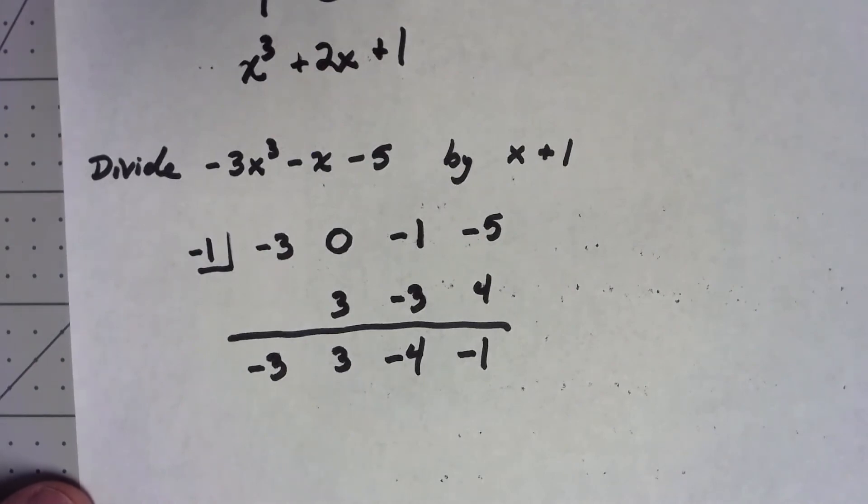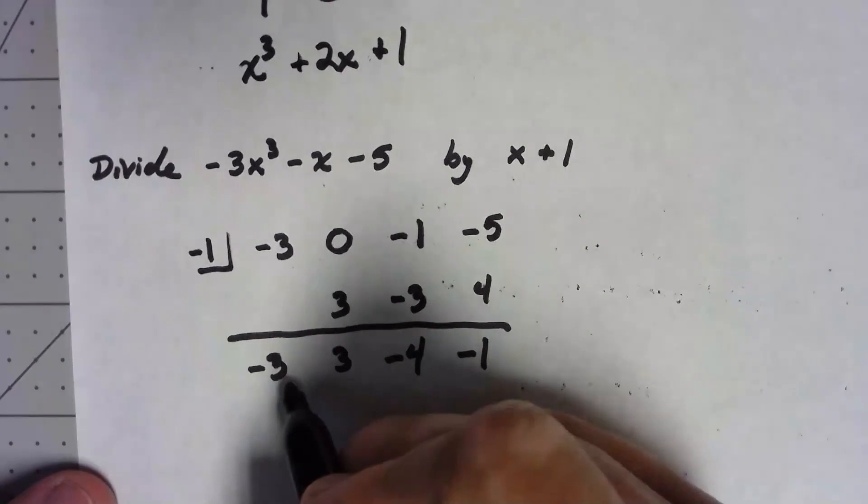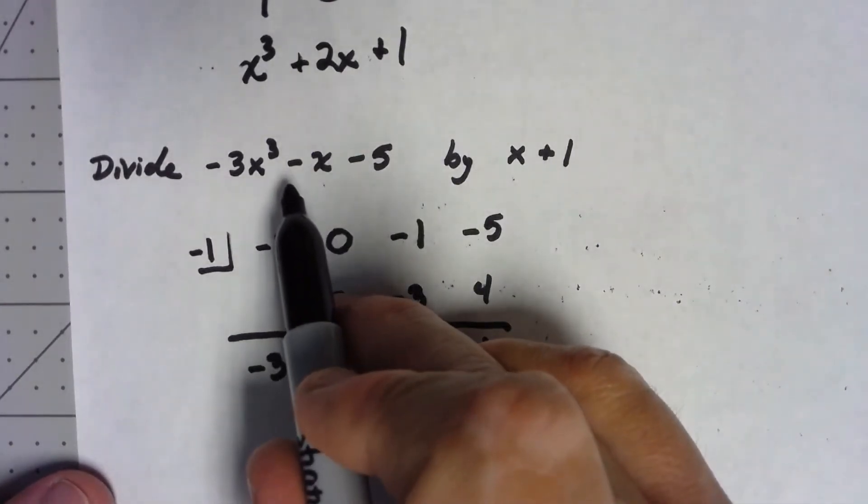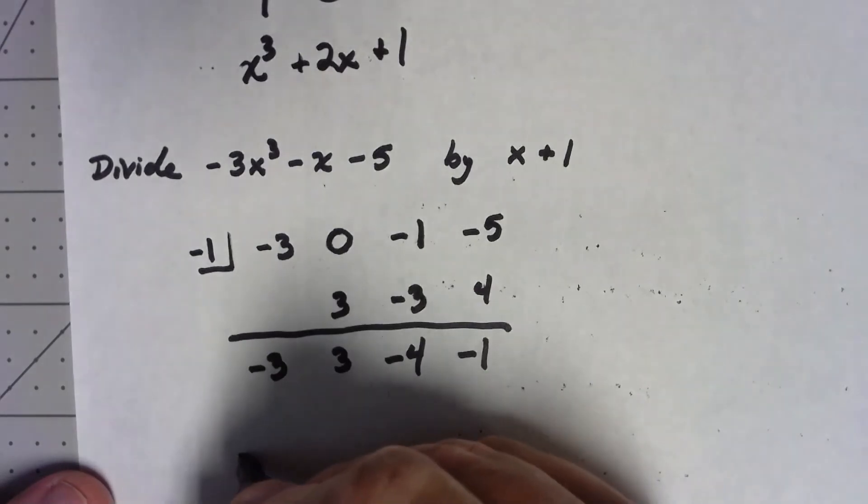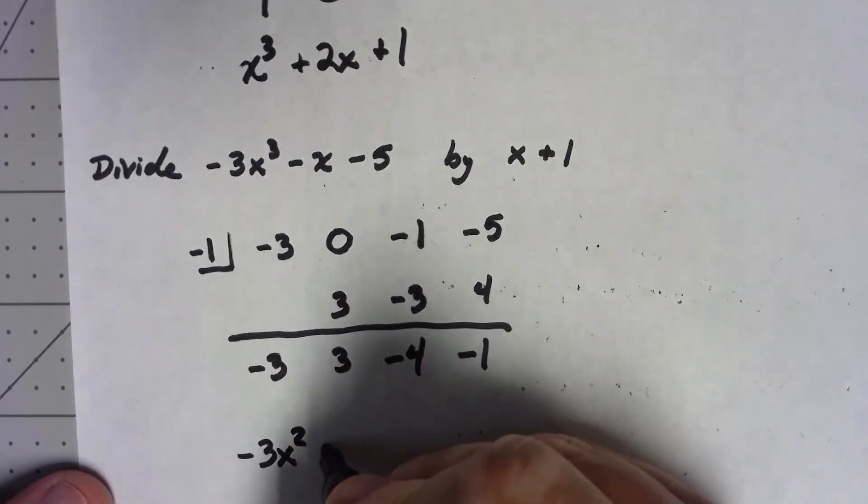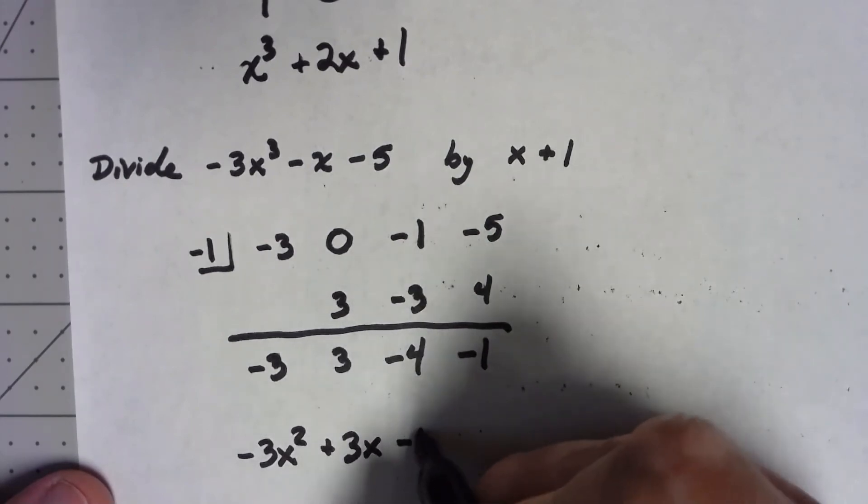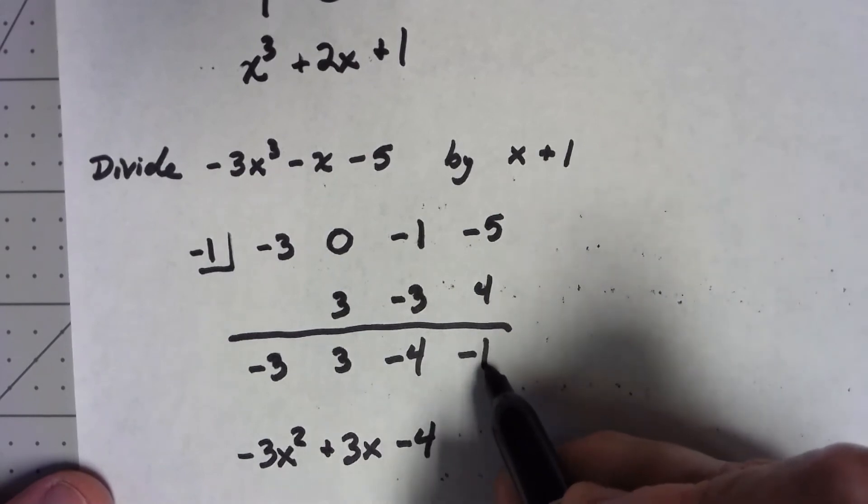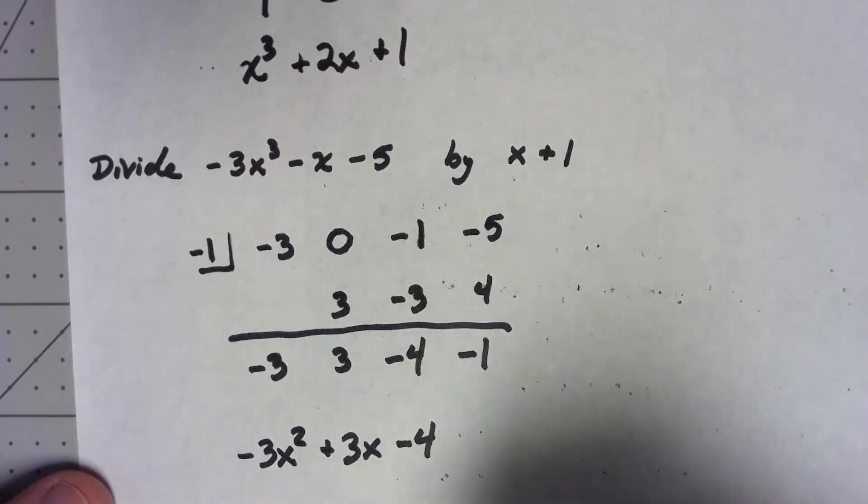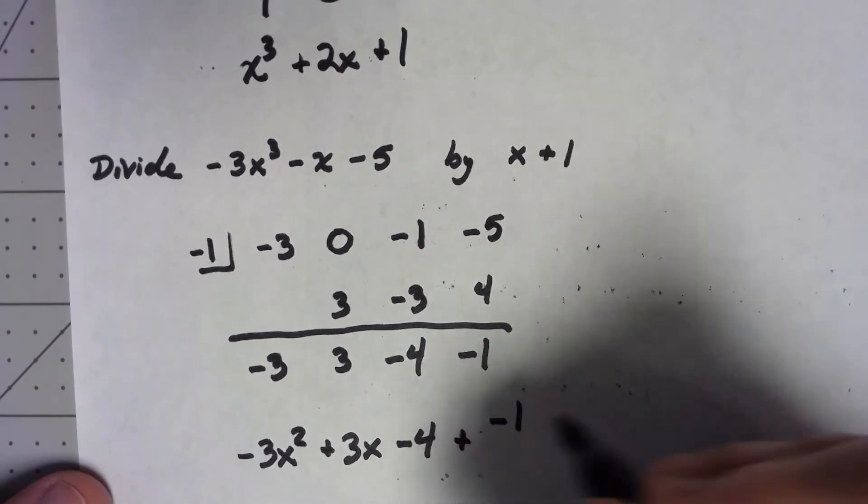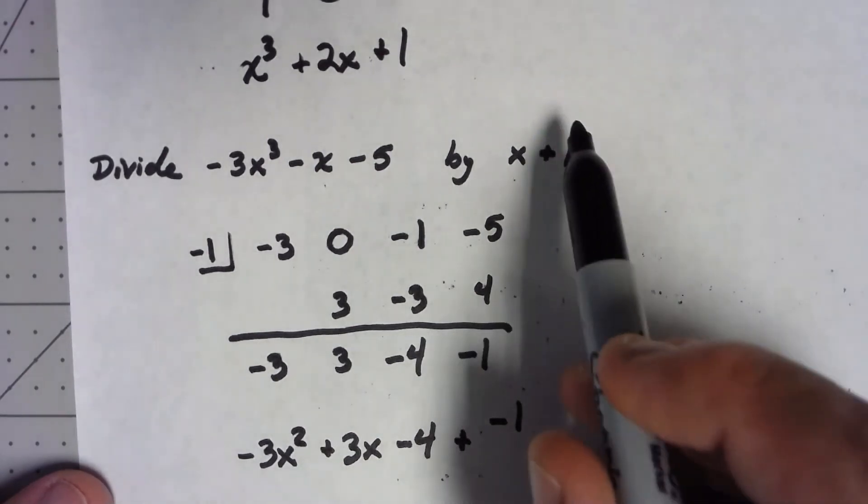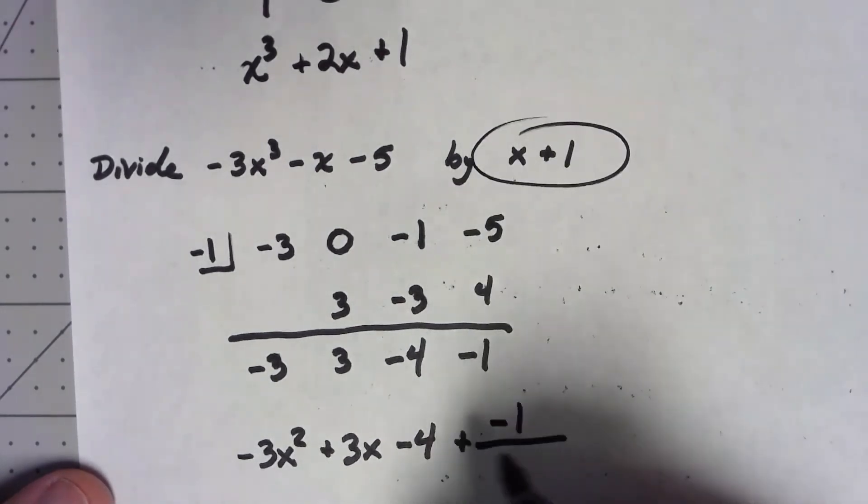And then, interpreting those results, we start with a power 1 less than we were dividing into. We were dividing into an x cubed thing. So this is a negative 3x squared. And then, keep going, marching down the powers. 3x minus 4. We've got a remainder of negative 1. So that's plus a negative 1 over the thing we were dividing by. So negative 1 over x plus 1.